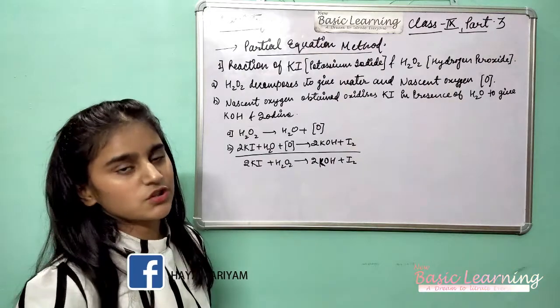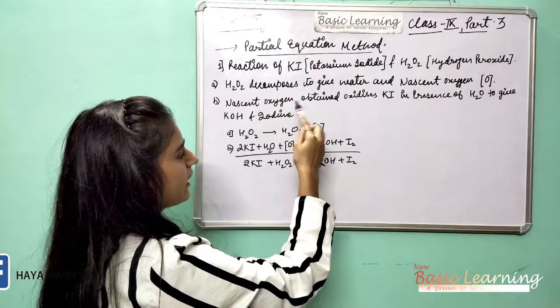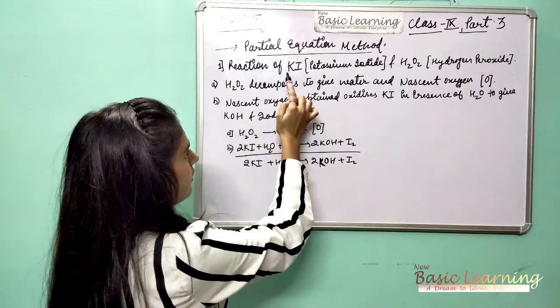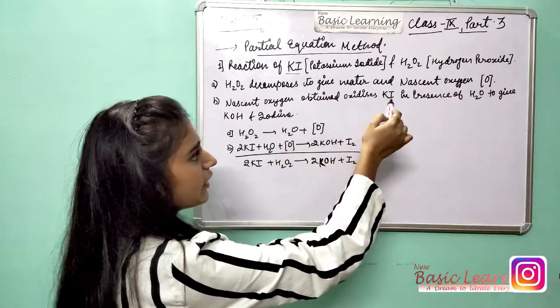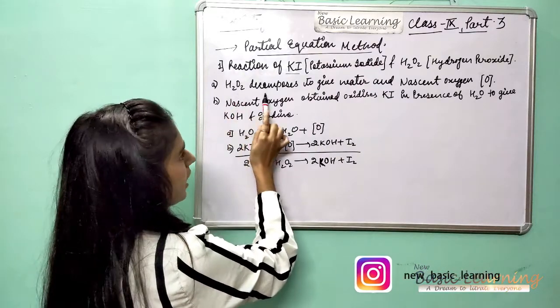Now in the first part, I have taken one example. Reaction of KI, potassium iodide, and H2O2, hydrogen peroxide. H2O2 decomposes to give water and nascent oxygen.